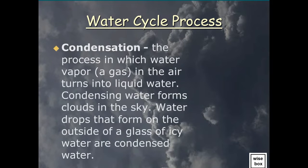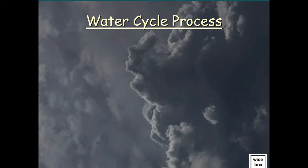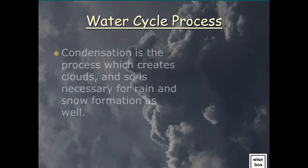Condensation is the process in which water vapor, a gas, in the air turns into liquid water. Condensing water forms clouds in the sky. Water drops that form on the outside of a glass of icy water are condensed water. Condensation is the process which creates clouds, and so is necessary for rain and snow formation as well.